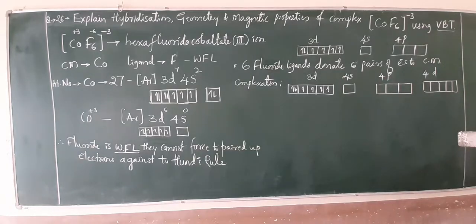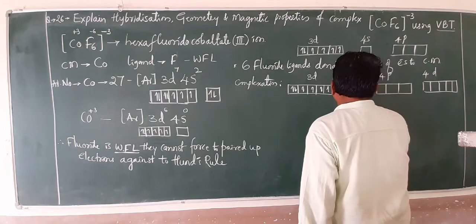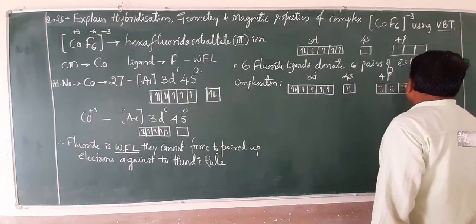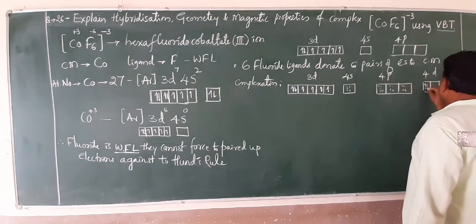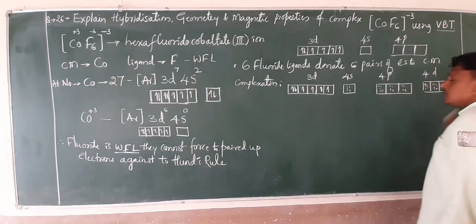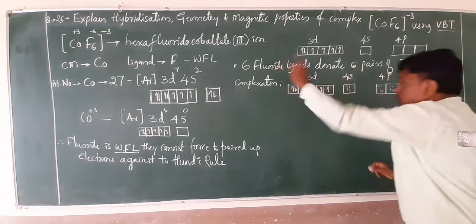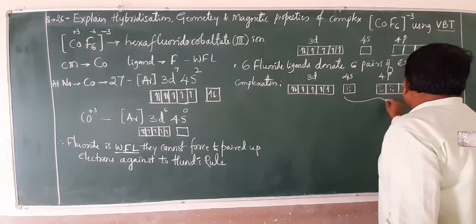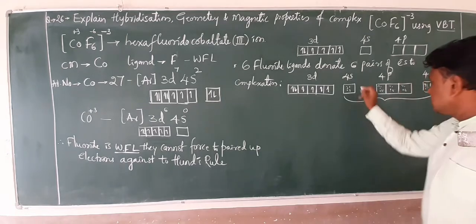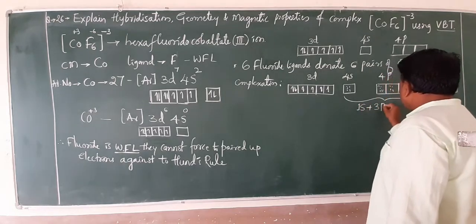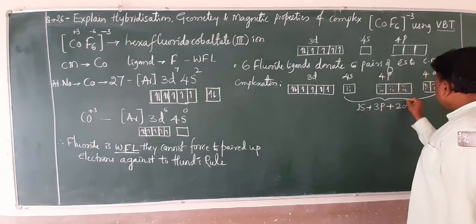The electrons will start to occupy 4d. 6 pairs: this is the first pair of electrons, 2nd pair, 3rd pair, 4th pair, 5th pair, and this is the 6th pair of electrons which is donated by the 6 fluoride ligands.